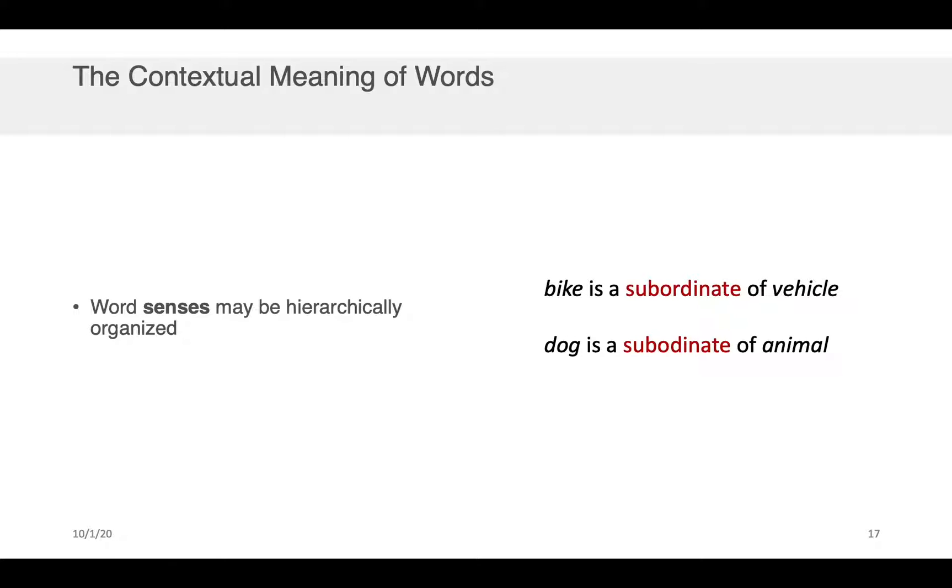Now, as you could probably tell from the previous couple of examples, not only do words have contextual relationships that indicate something about their similarity, but the word senses that exist can often be hierarchically organized. So a bike, for example, is a subordinate of a vehicle. That is, bike sort of belongs to the vehicle class, if you will. And dog is a subordinate of animal.